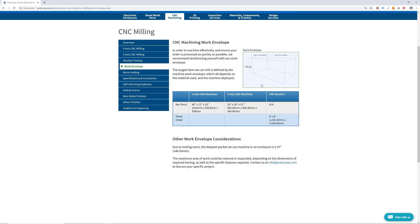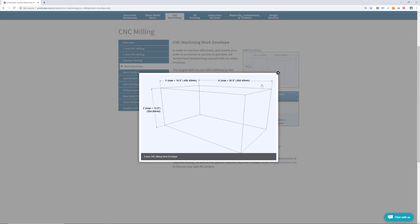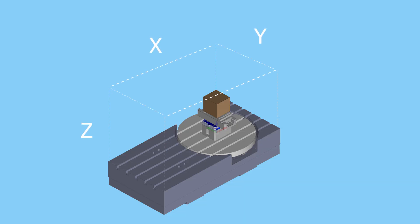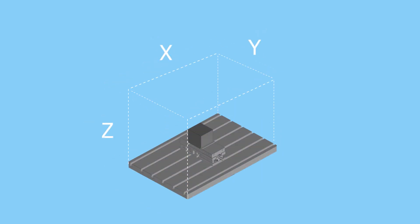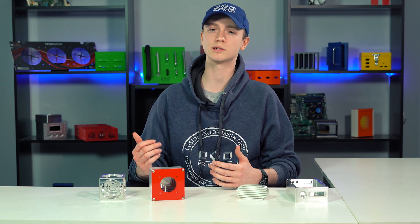Finally, work envelope. Work envelope refers to the maximum size bar stock that we can CNC machine. Our 5-axis machines have a work envelope of 40 inches wide, 22 inches deep, and 20 inches high. Our 3-axis CNC machines are smaller, with a work envelope of 26 inches wide, 16 inches deep, and 12 inches high. The bar stock that we use must fit within these maximum dimensions; otherwise, it will be too large to accommodate the CNC tooling used to machine your part.